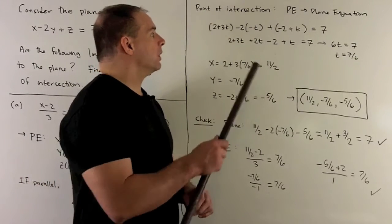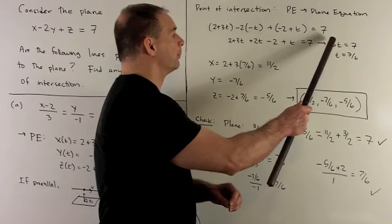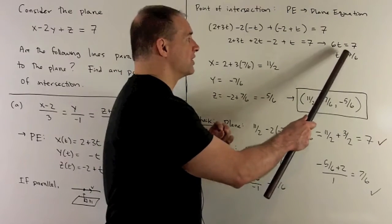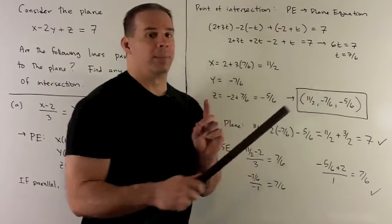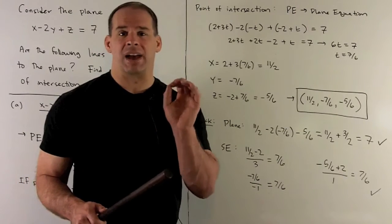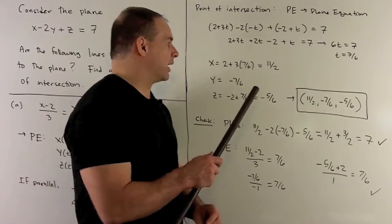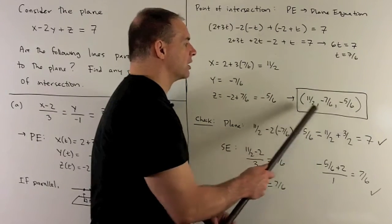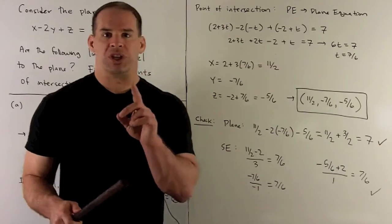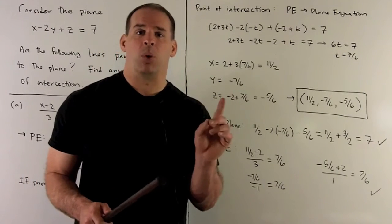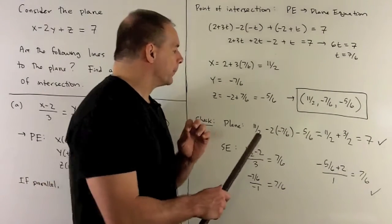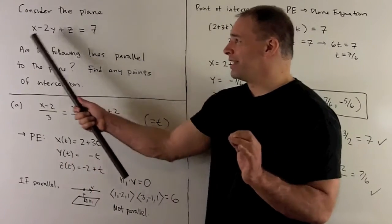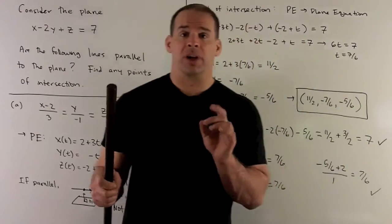We put our parametric equations into the equation for the plane and solve for t, which gives t equals 7 over 6. Taking that value and substituting into the parametric equations for x, y, and z gives us the point (11/2, minus 7/6, minus 5/6). We should check that this is a point in the plane — putting it into the plane equation gives 7, which is what we expect, so our point satisfies the equation of the plane.